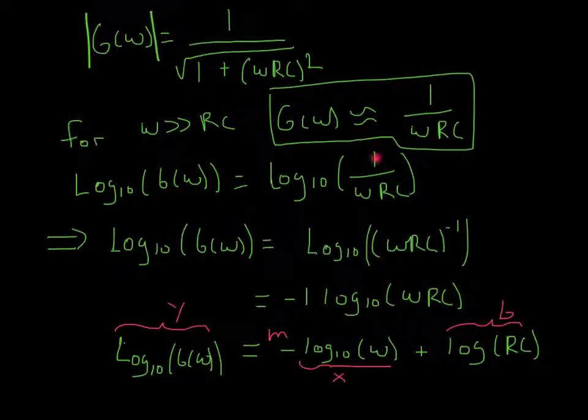Well, omega RC is the same thing as to the minus 1. Here's the beautiful thing. When you take a log to something that's to a power, you can just pull the power out. So this minus 1 goes to the outside, and you're left with log of G of omega is equal to minus 1, log 10 of omega RC. And if we write it again, we get log of G of omega is equal to minus log 10 omega plus log of RC. Remember you can split up logs this way if they're multiplied.